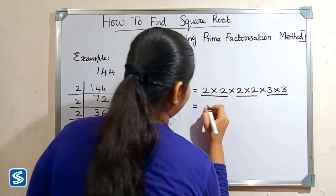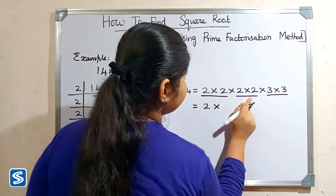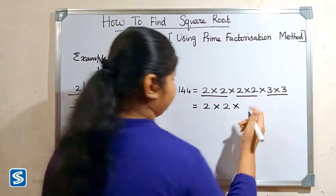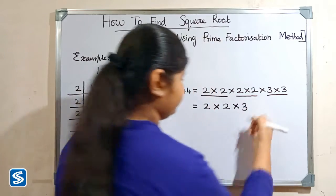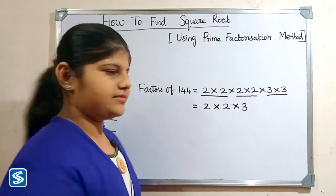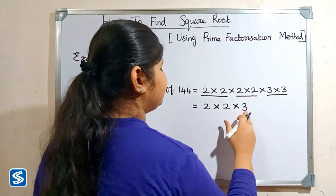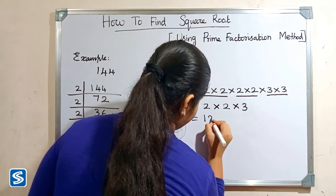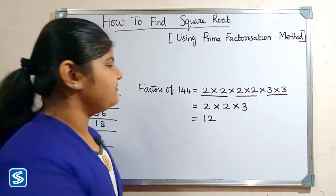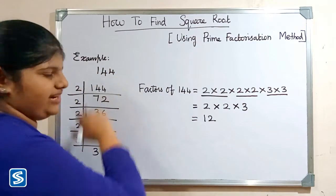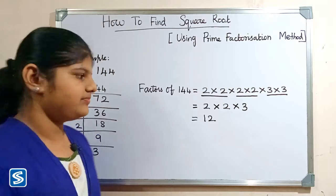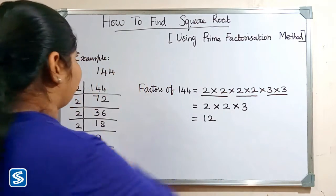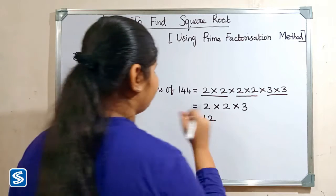So 2 × 2 × 3 — that gives us 12. The product will be the square root of the given number. So the square root of 144 is 12.